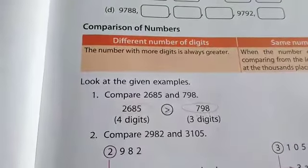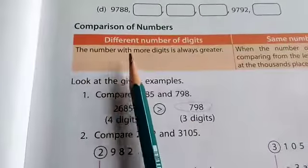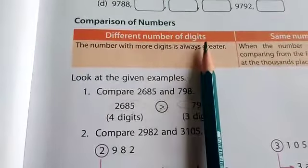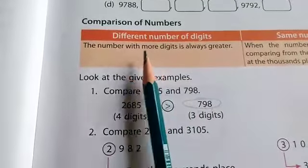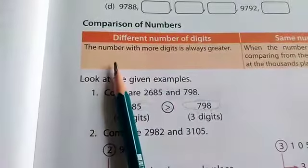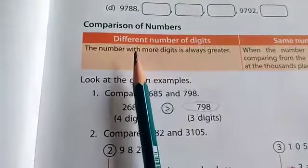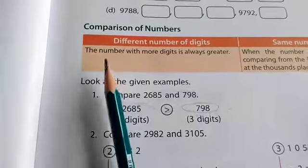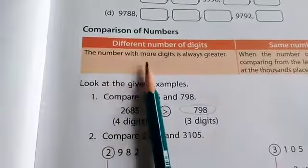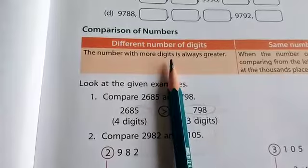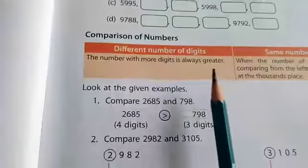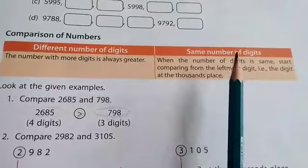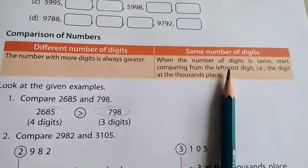In this topic, we are going to learn: first, how to compare numbers with different number of digits — ones, tens, hundreds, and thousands. Then, we are going to learn how to compare numbers with the same number of digits.